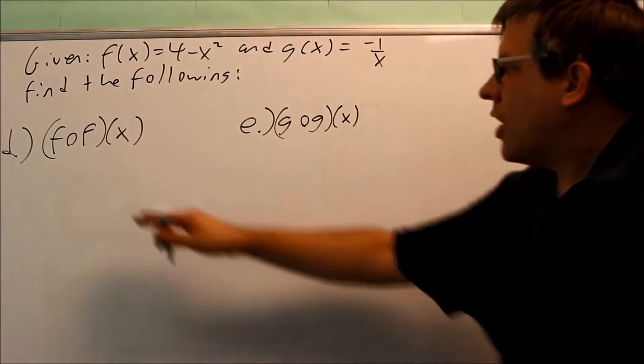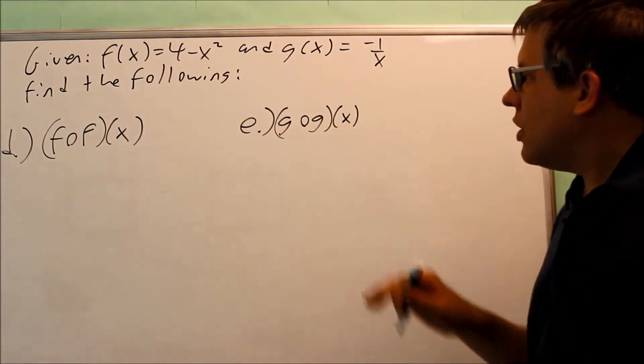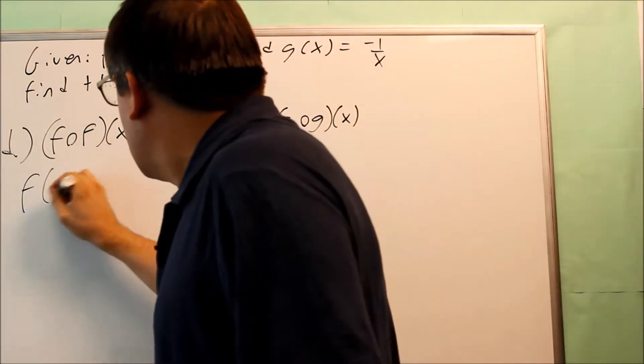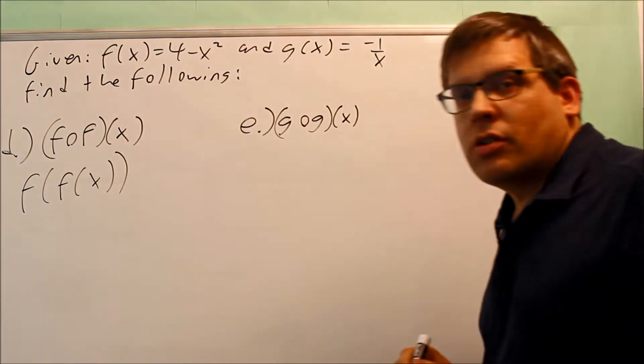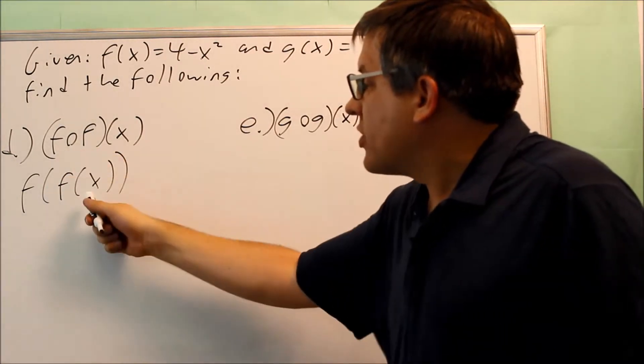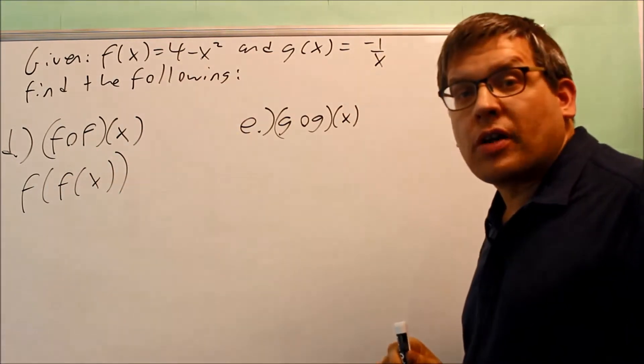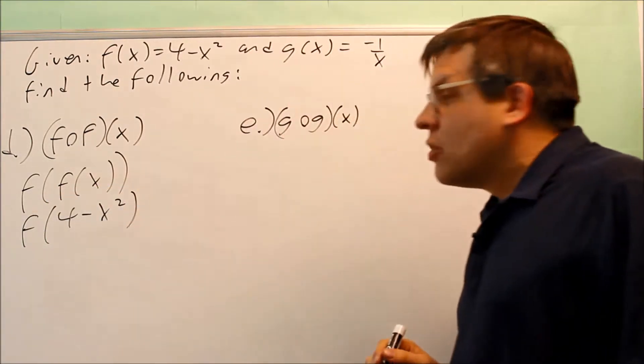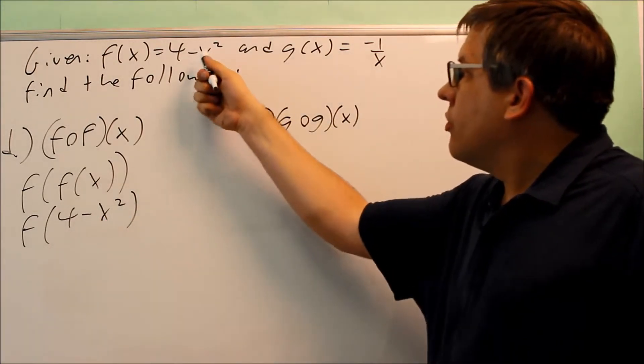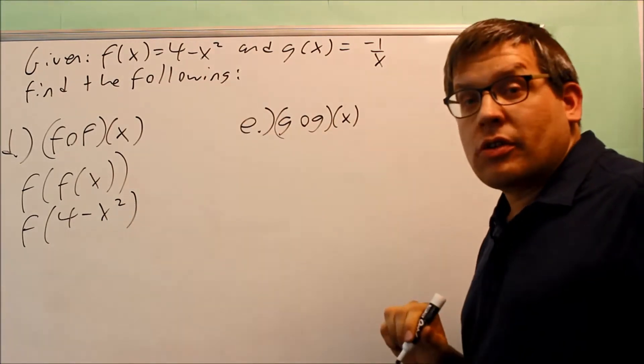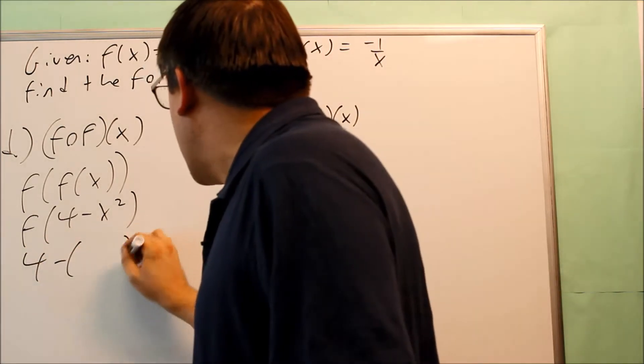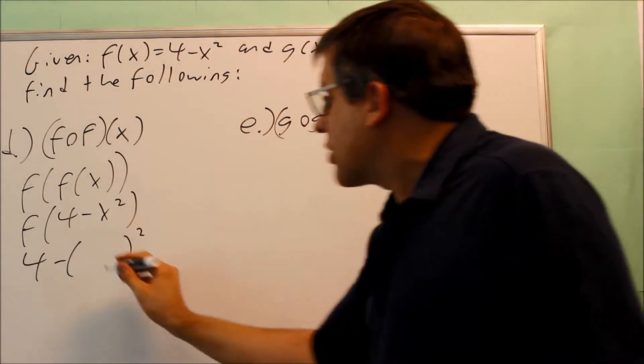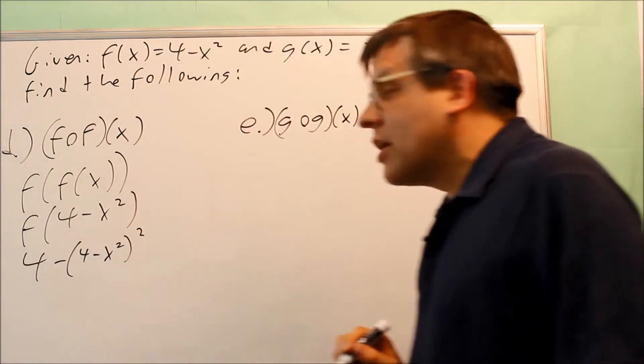Now we do d and e. Okay, so d is f of f of x, and e is g of g of x. So for the first one, f of f of x, it's going to look like this. I'm going to write out the definition. I'm going to first start by replacing the f of x with 4 minus x squared. I get f of 4 minus x squared. So now I need to put 4 minus x squared into this x. I'm putting it back into itself. The way the template works is I have 4 minus something squared. Okay, so the x is gone. Replace the x with 4 minus x squared goes inside there.